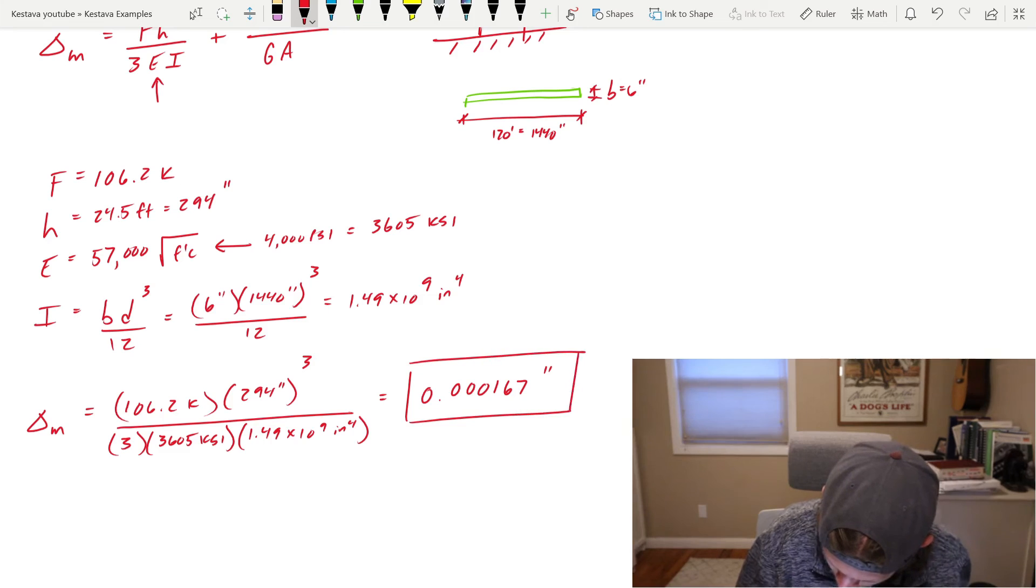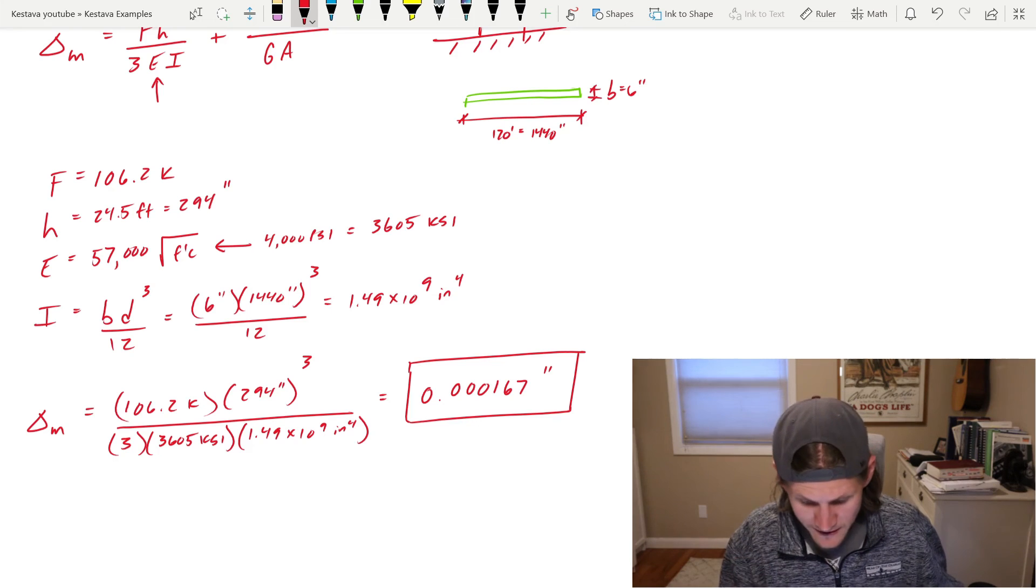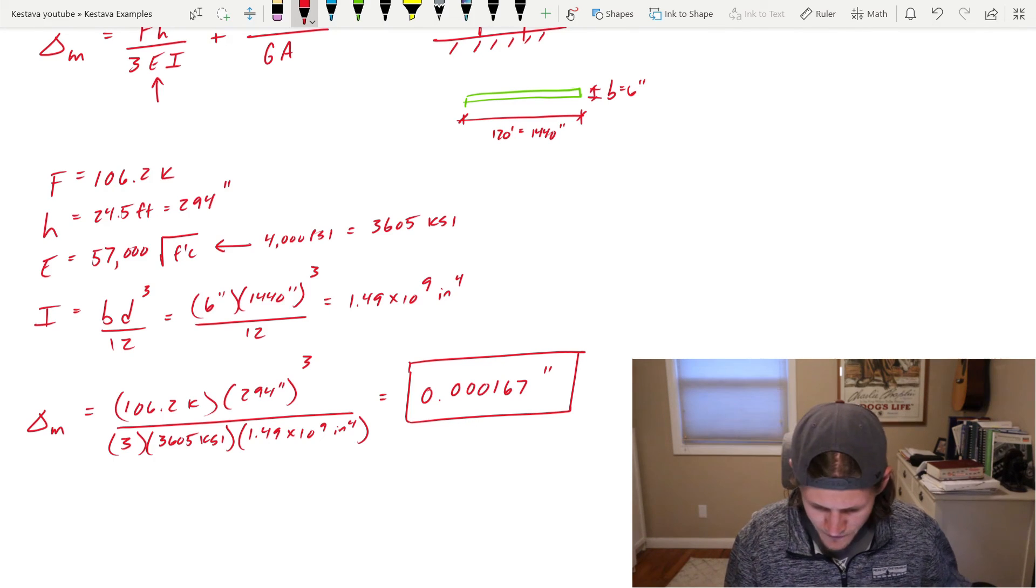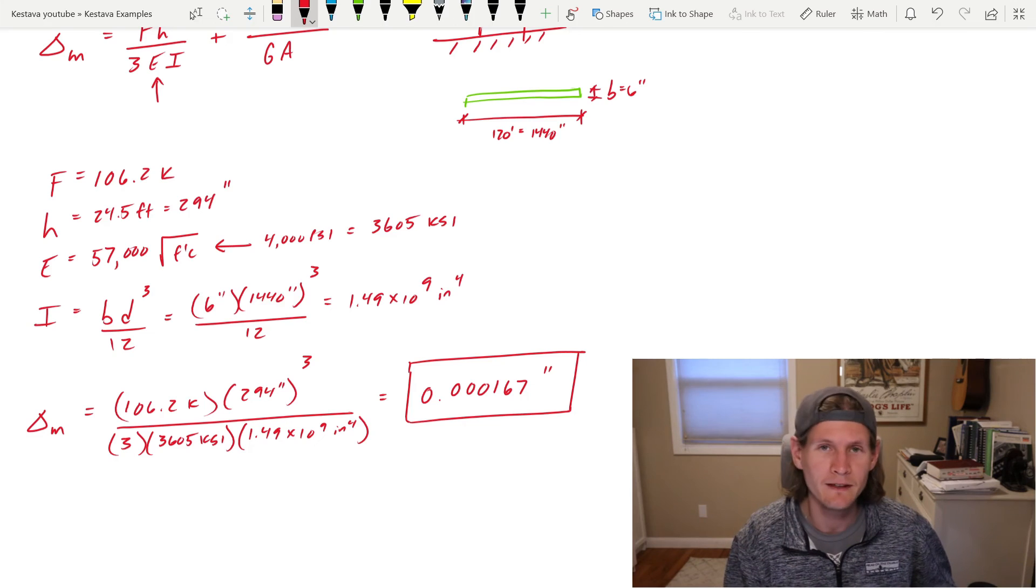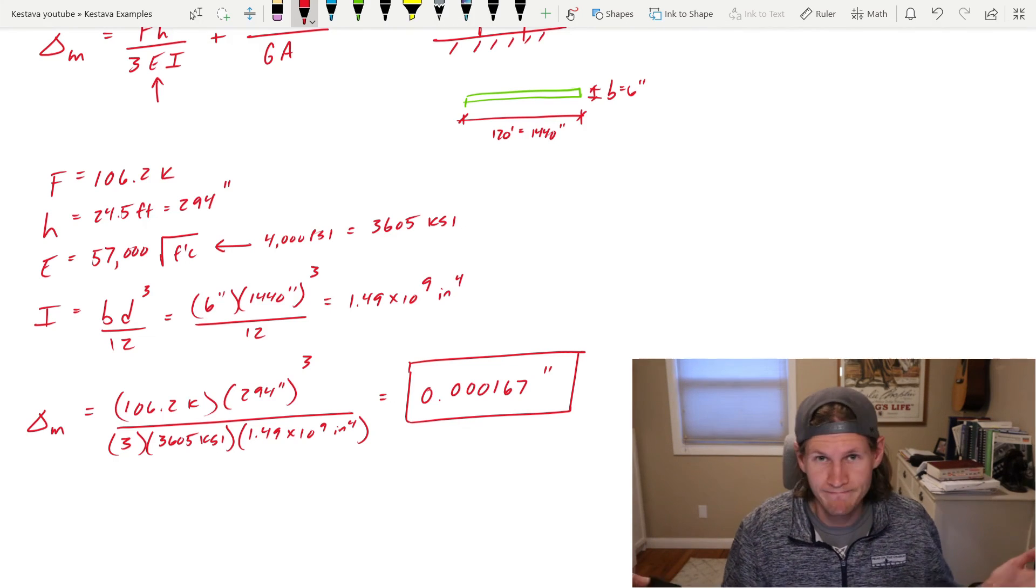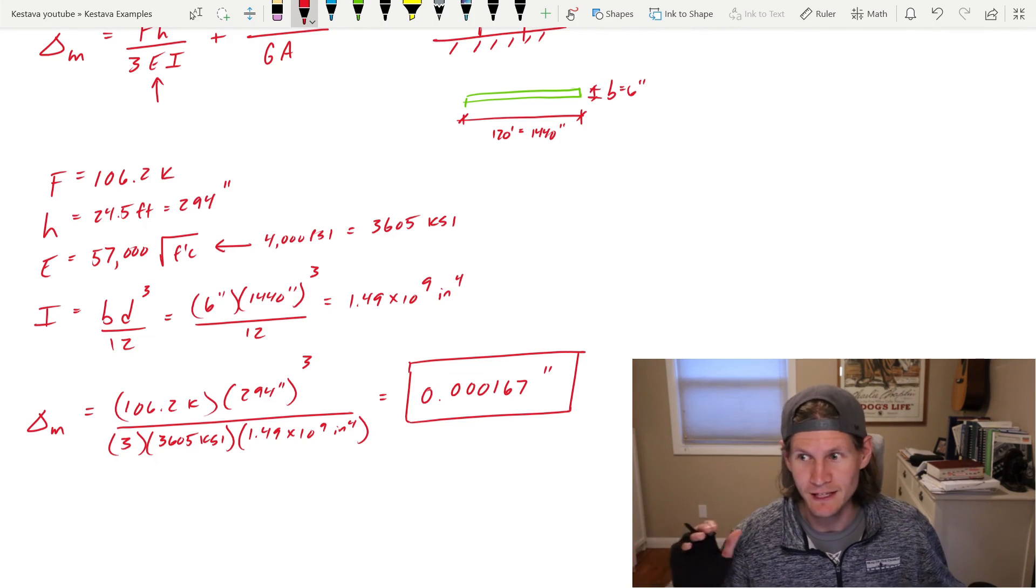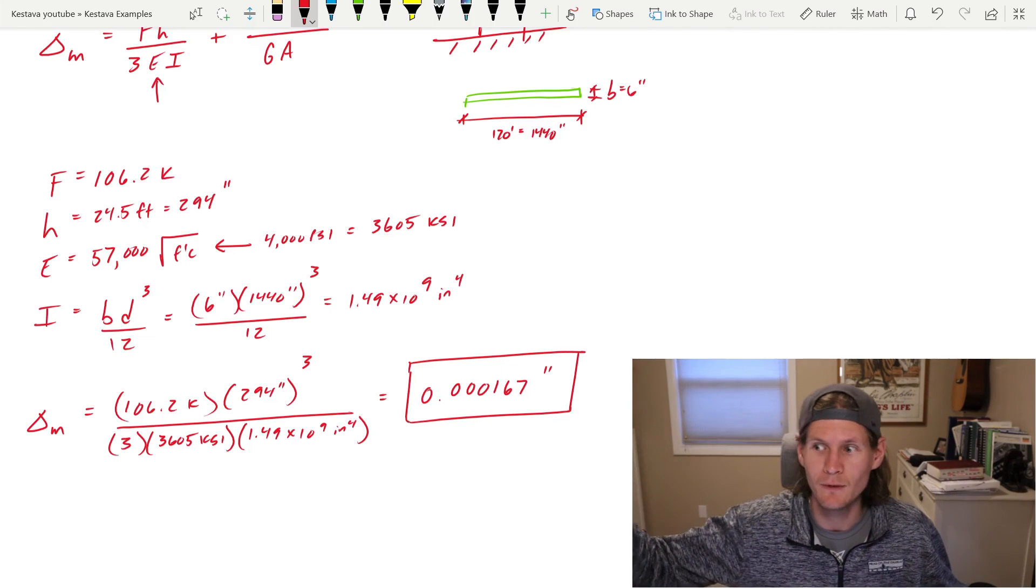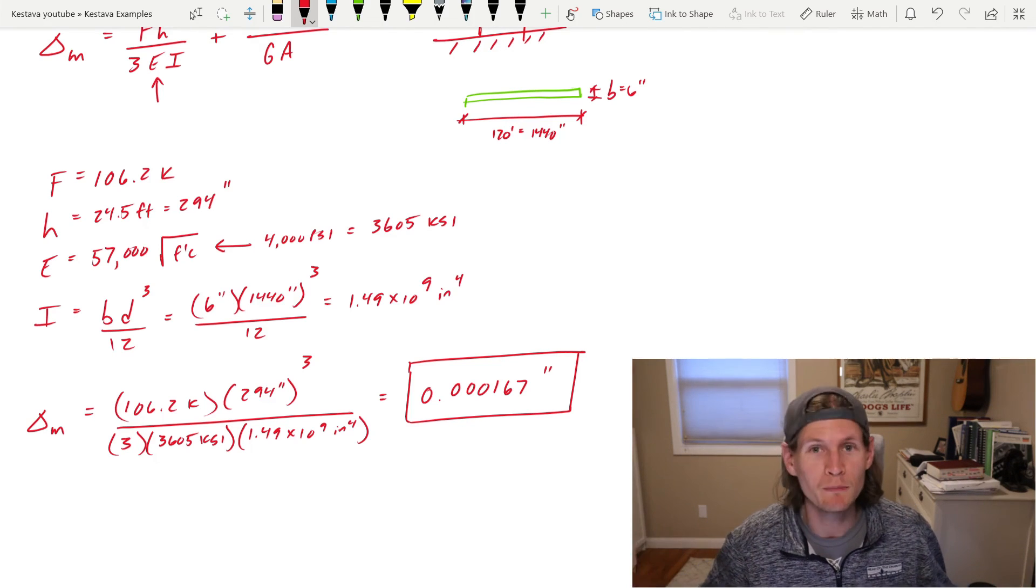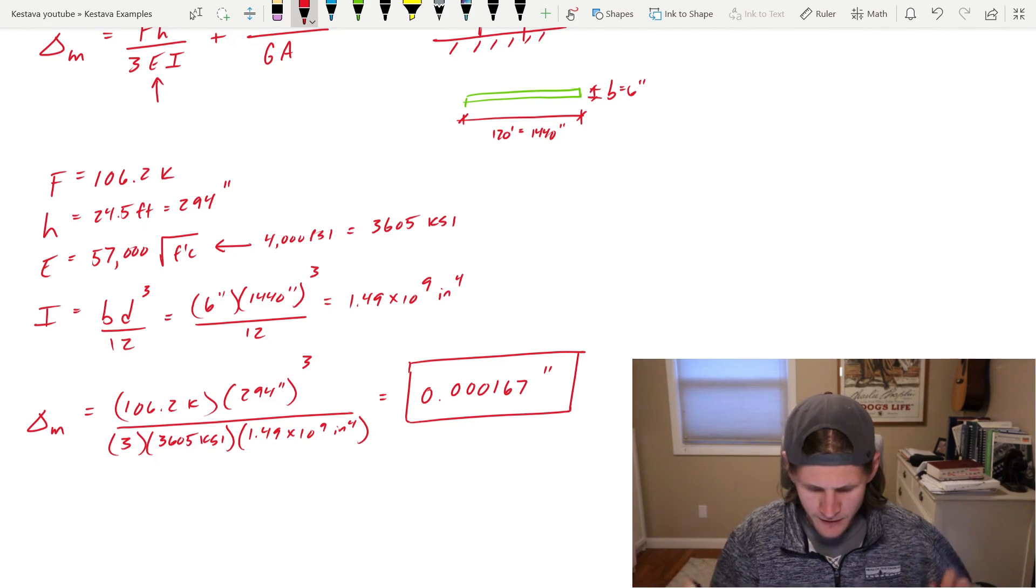So delta M all plugged in is equal to the following 0.000167 inches. Man, that thing is moving. Now, this is just drift due to bending due to moment. It's insignificantly small. But then again, we also have 120 feet of specially reinforced concrete shear wall. So that's a ton of shear wall. And your aspect ratio is great because it's 120 feet in length and it's only 24.5 feet tall. So it's a super ultra stiff wall. So you're not going to get a lot of drift.